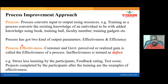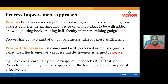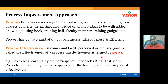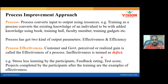If the customer experience is bad, that is called an effectiveness issue. There is a quality issue due to process effectiveness. Customer and perceived realized gain is called the effectiveness of a process. Any ineffectiveness is termed as a defect. Defect is ineffectiveness — customer expected something, but your process delivered something else. Defect doesn't only mean physical damages; anything not conforming to the customer requirement is a defect.